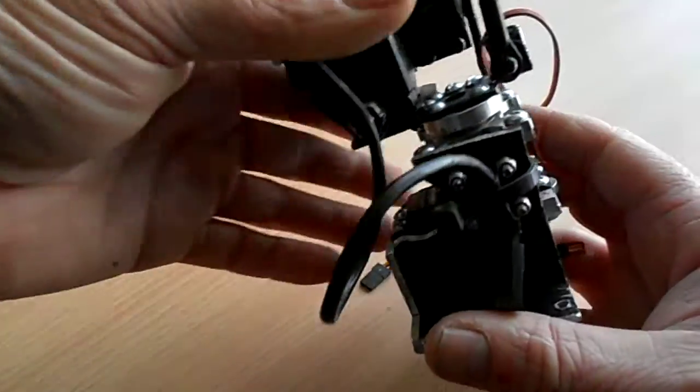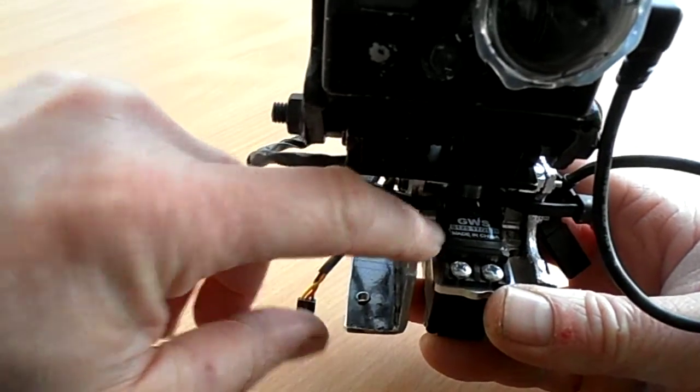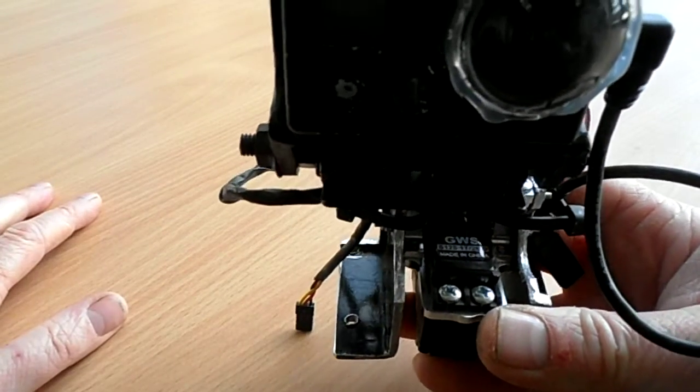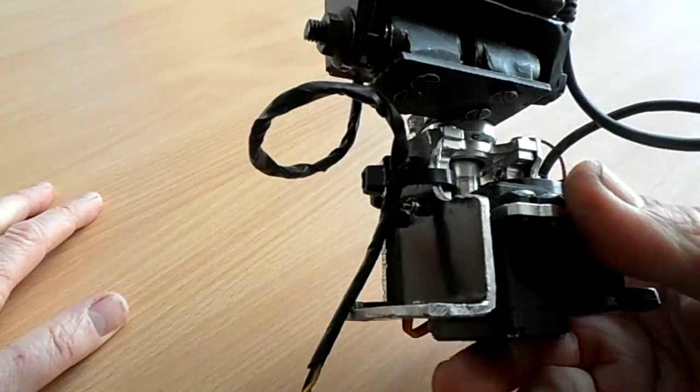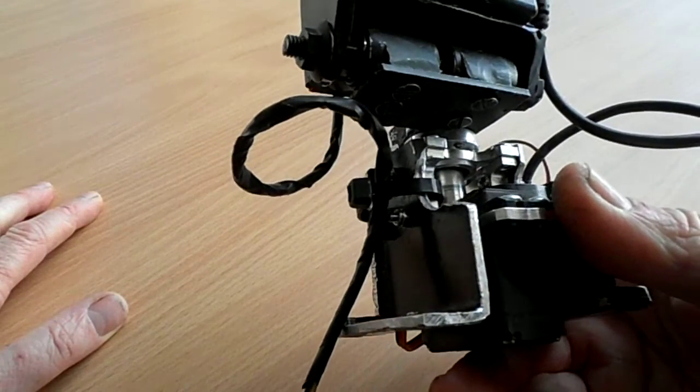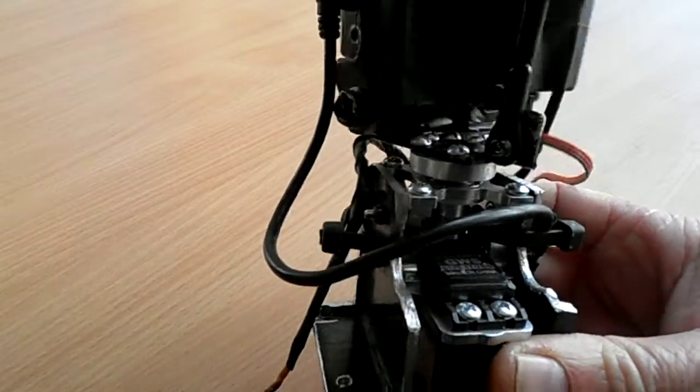So what I've got here is a 360 degree GWS sail winch servo, which is obviously very handy for full range of movement.